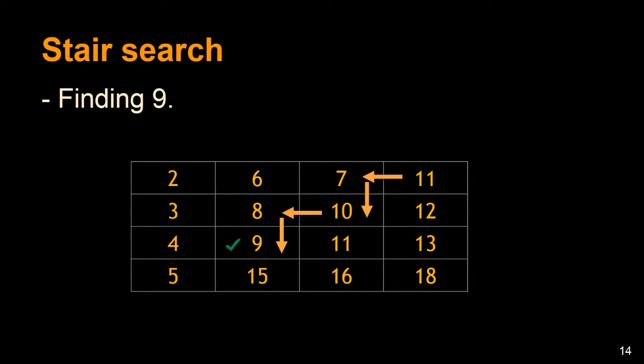So the idea is to move down if the element is greater than the cell's value; if the element is less than the matrix cell's value, we move left. That's all it is. That way you will end up with the time complexity of order of N.